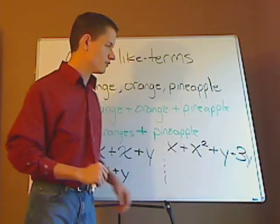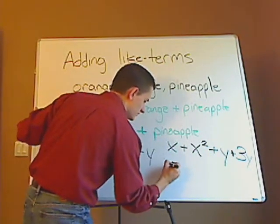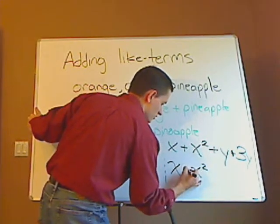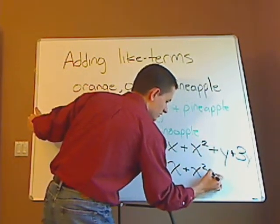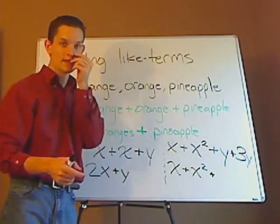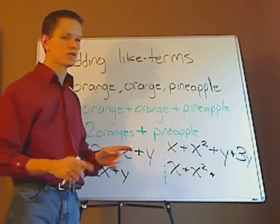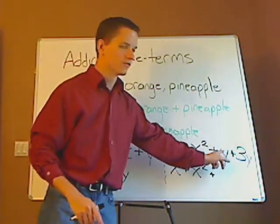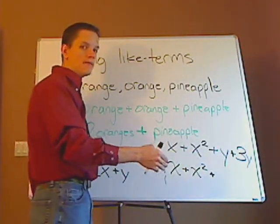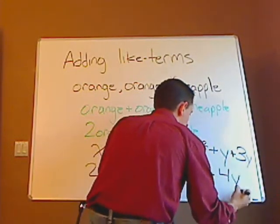But what's y plus 3y? You just leave the x and x squared the same, so it would be x plus x squared plus — now it's implied, like an orange. I didn't say there's one orange, but there is an orange. That's implied — there's a 1 in front of the variable. So that's 1y plus 3y, which gives you 4y.